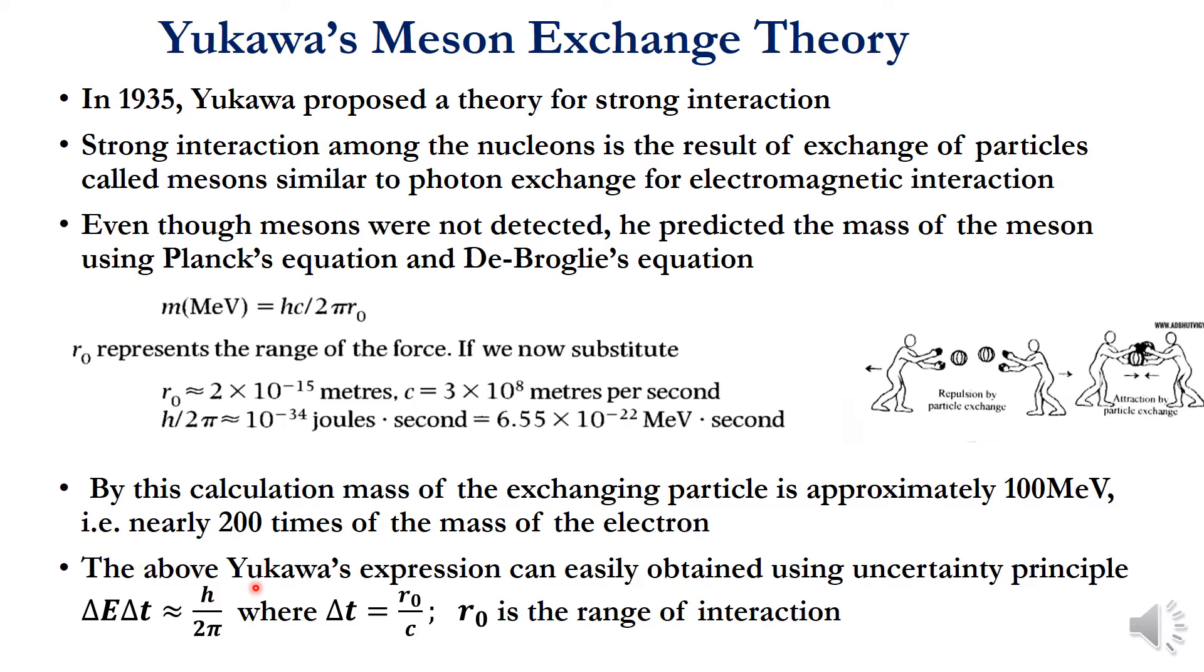The above Yukawa's expression can easily be obtained using the uncertainty principle: ΔE × Δt = ℏ, where Δt = r₀/c, where r₀ is the range of interaction. Since velocity c = r₀/Δt, this Δt can be written like this. That is why Yukawa's expression can simply be obtained from these two expressions.